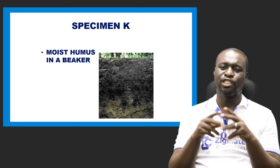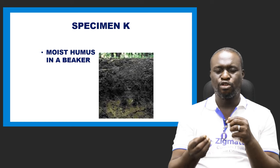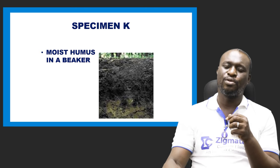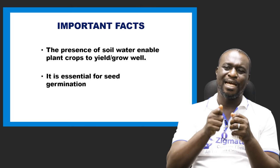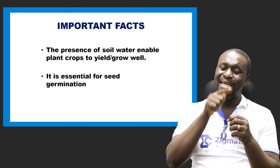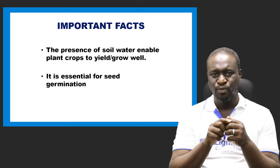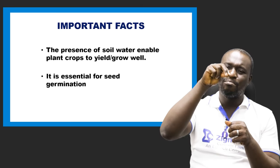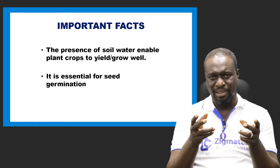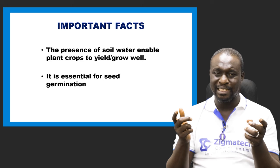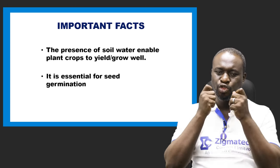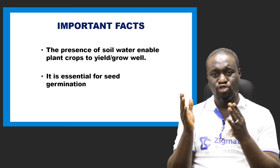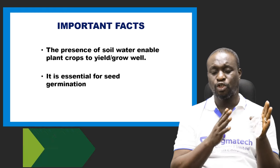Specimen K is moist humus. Moist humus contains soil water, enabling plants to grow well. Soil water is also essential for seed germination — when a seed is planted in moist humus, it absorbs water, splits its testa, and germinates. Planting in dry humus will not result in germination, but planting in moist humus will allow the seed to germinate successfully.